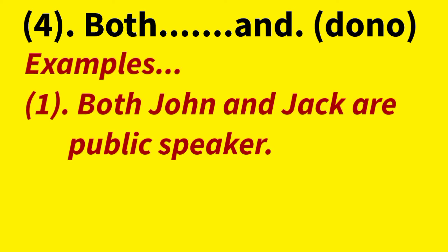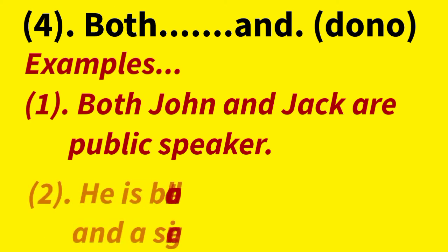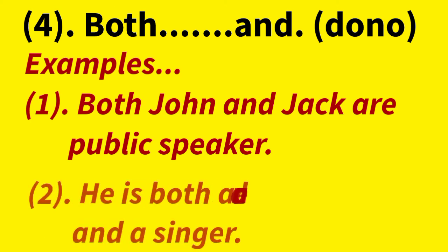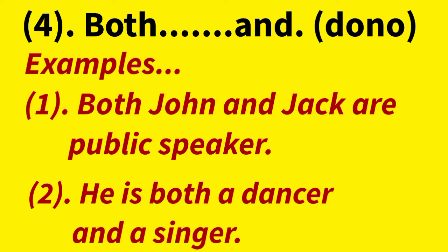The next example: He is both a dancer and a singer — woh ek dancer bhi hai aur ek singer bhi hai, meaning he is both, a dancer as well as a singer. The fifth correlative conjunction is so...that.